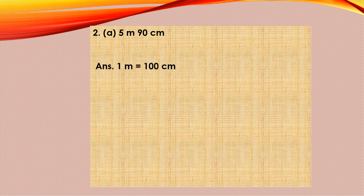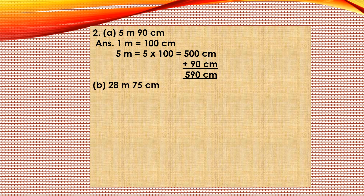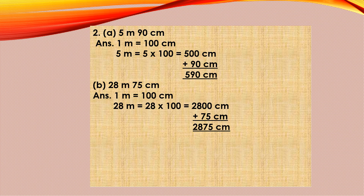Question two: change into centimeters. Part A — 5 meters 90 centimeters. One meter equals 100 centimeters, so 5 meters is 5 into 100, that is 500 centimeters. 90 centimeters is already in centimeters, so add it to 500 — you get 590 centimeters. Part B — 28 meters 75 centimeters. 28 meters is 28 into 100, that is 2800 centimeters. Add 75 centimeters — it becomes 2875 centimeters.